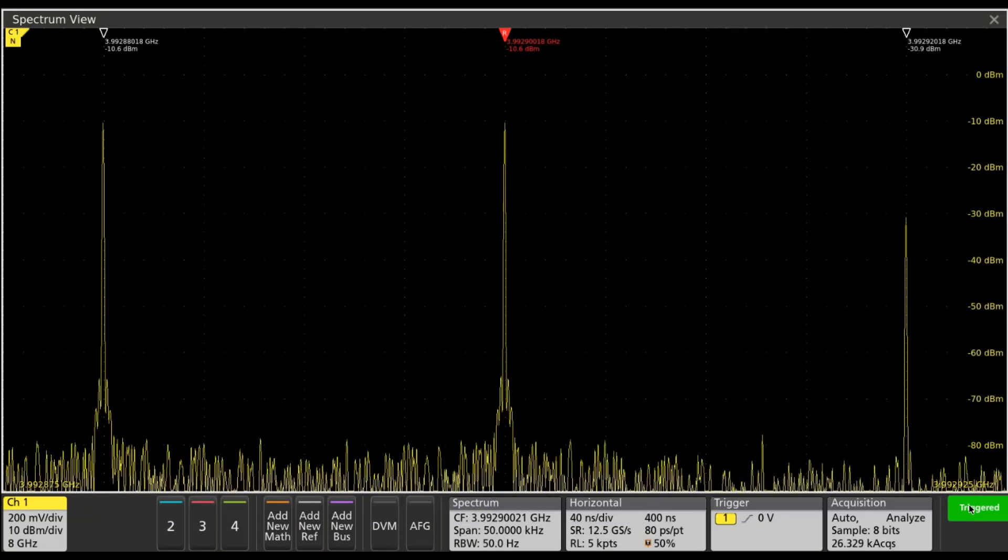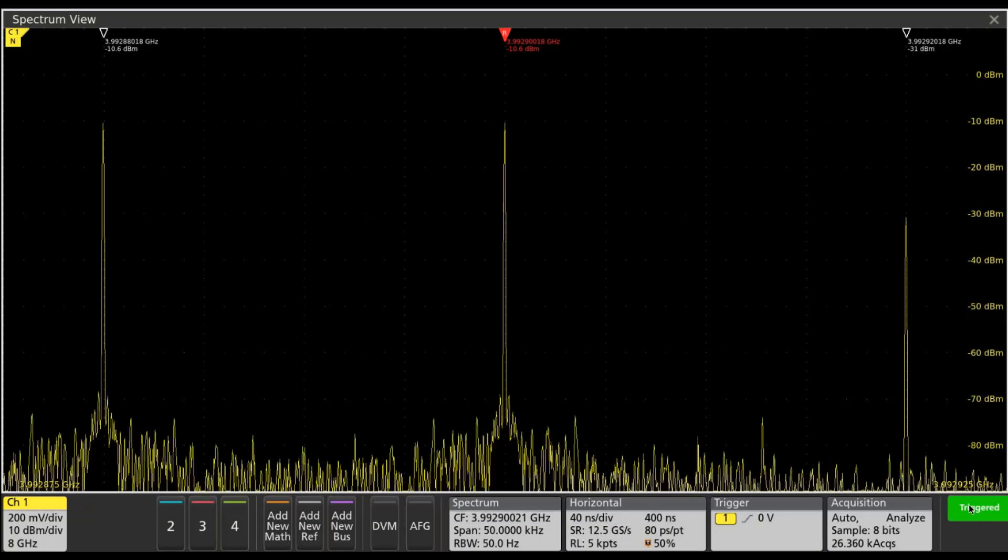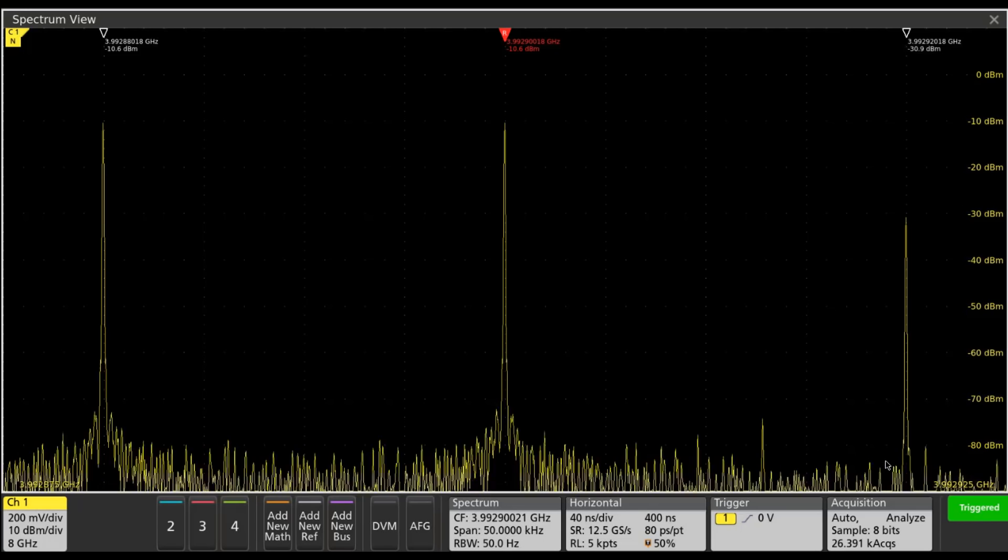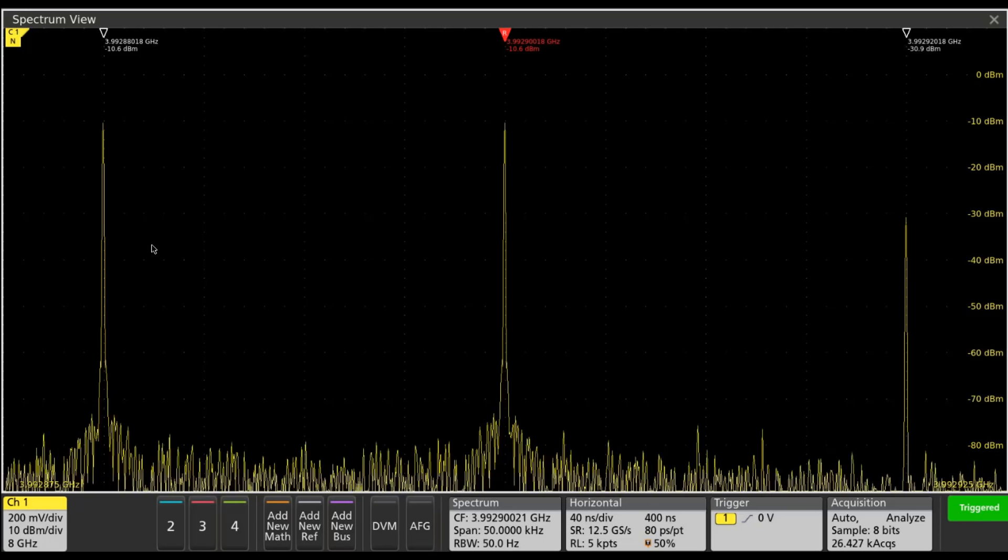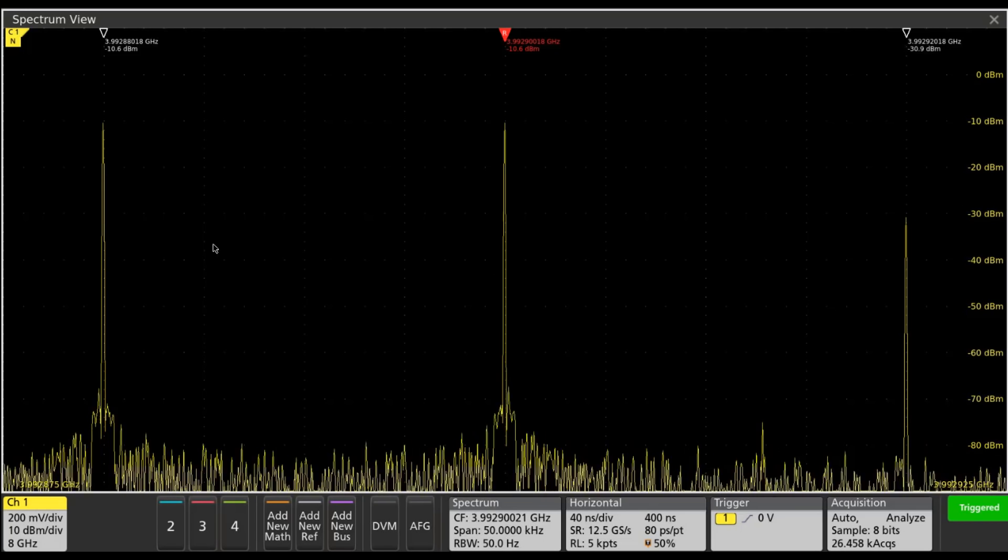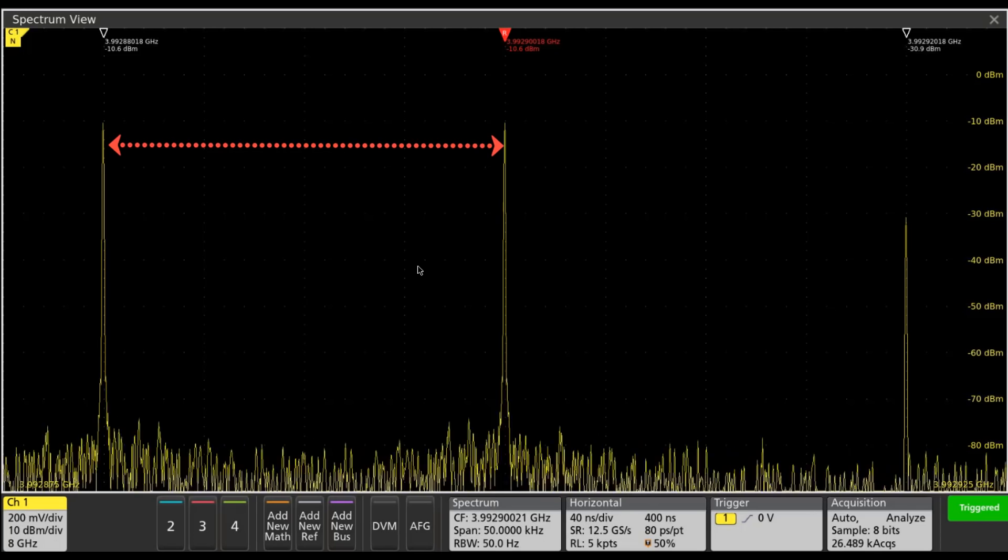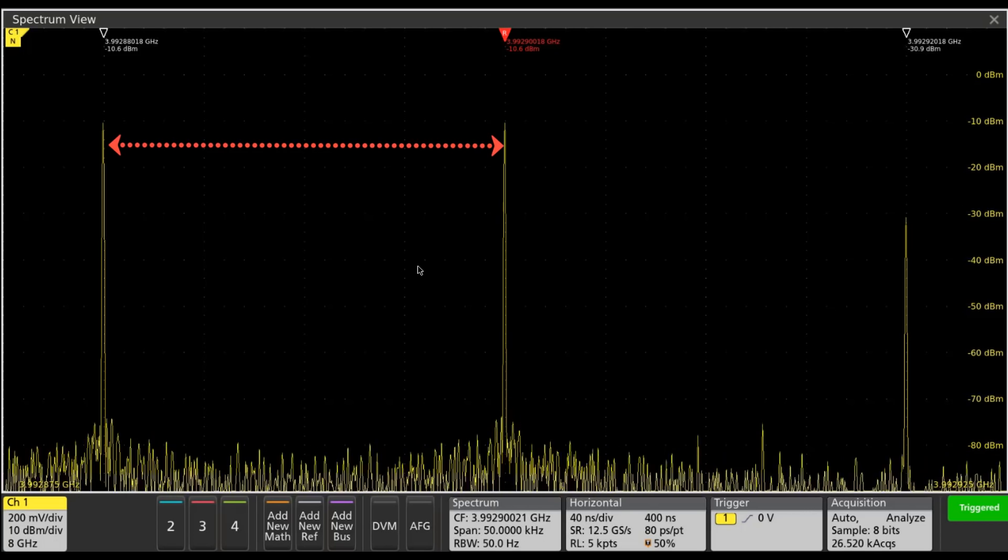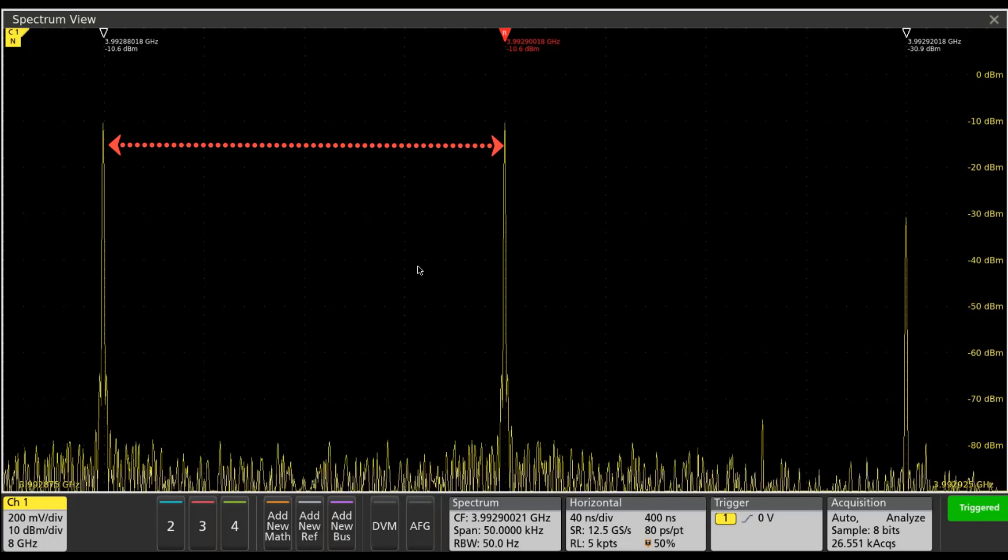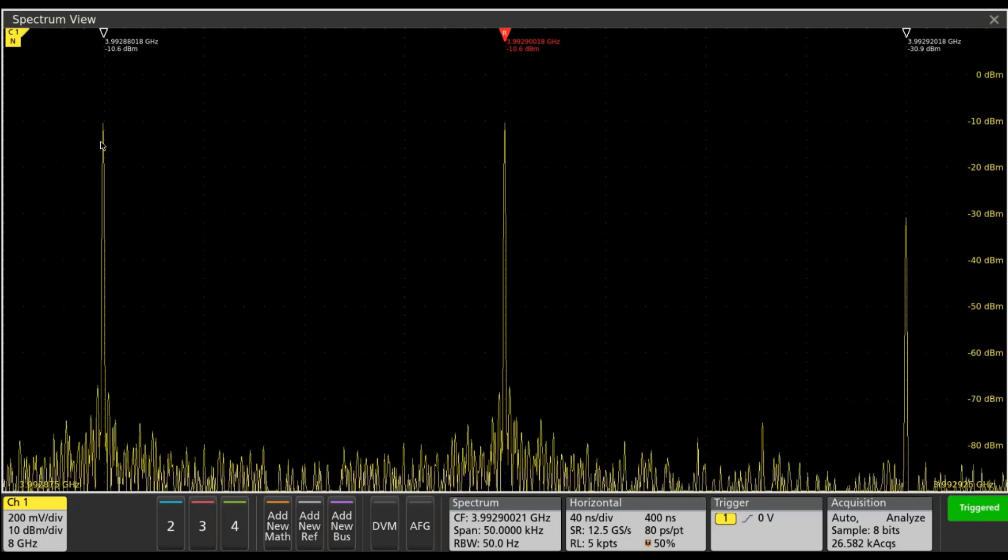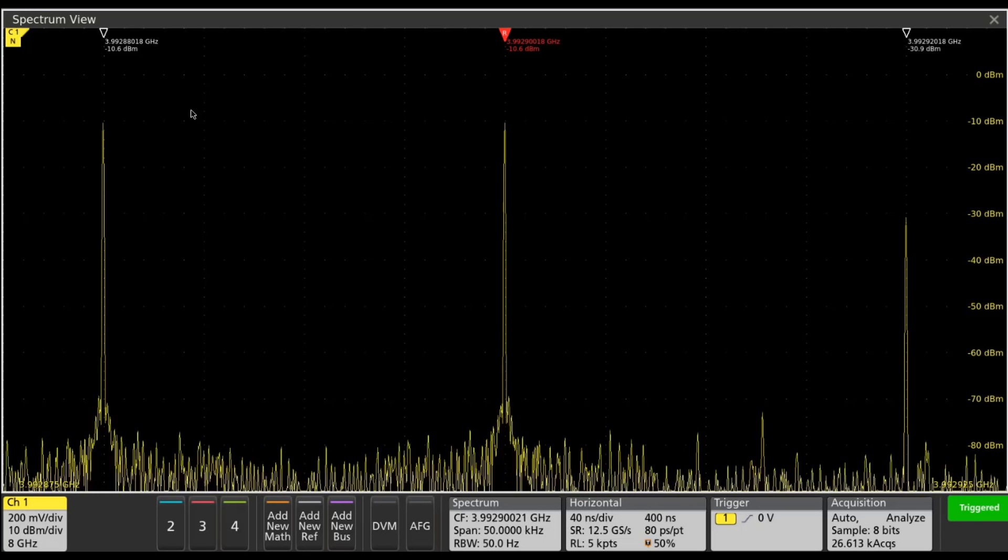In order to illustrate the relationship between a third-order intermodulation distortion product and the input signals, I've got a pair of signals here that are just 20 kHz apart. They're actually HF signals that are applied to a microwave mixer, and I'm up-converting them up to about 4 GHz.